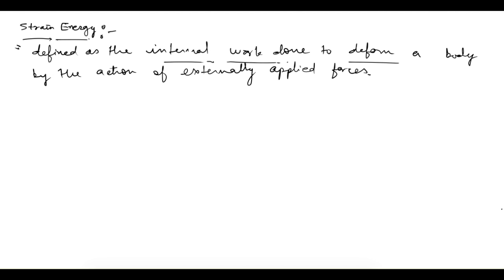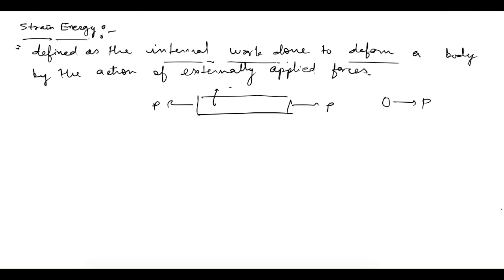To understand that, let's say we take a steel bar and apply a load P on it. This load is gradually applied — initially it is zero, then it increases to P. Because of this load, there will be stresses in the material, and let's say there is a deformation of delta L in this bar, so strain will also be present. Now let's write the external work done due to this load P. Work done is force times displacement.